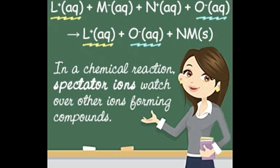Consider a neutralization reaction between two compounds KOH (aq) and HNO₃ (aq). The complete ionic equation shows K⁺ (aq) and OH⁻ (aq) on the left side reacting with HNO₃ to form KNO₃ (aq) and H₂O (l). It can be observed that K⁺ (aq) and NO₃⁻ (aq) are present on both the left and right sides of the equation and remain unchanged. Therefore, they are termed spectator ions.